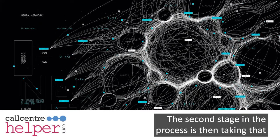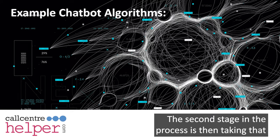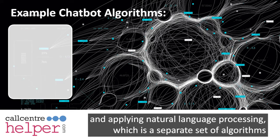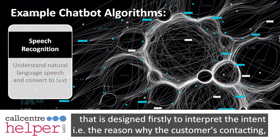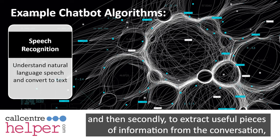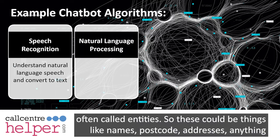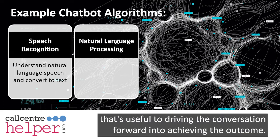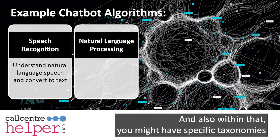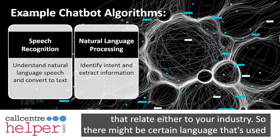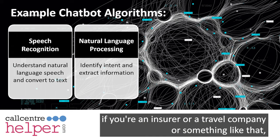The second stage is taking that and applying natural language processing, which is a separate set of algorithms designed firstly to interpret the intent — the reason why the customer is contacting — and secondly to extract useful pieces of information from the conversation, often called entities. These could be things like names, postcodes, addresses, anything useful to driving the conversation forward. You might also have specific taxonomies that relate to your industry, such as language used by an insurer or a travel company.